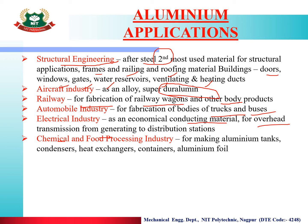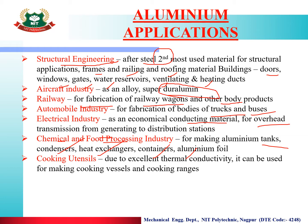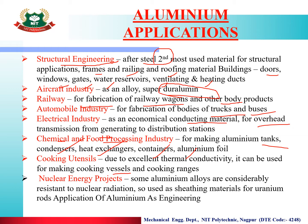In chemical or food processing industries, aluminium is used for tanks, condensers, heat exchangers, containers and foils. It is used for cooking utensils due to its good thermal conductivity. In nuclear energy projects, some alloys are considerably resistant to nuclear radiation, so aluminium is used for sheathing uranium rods.